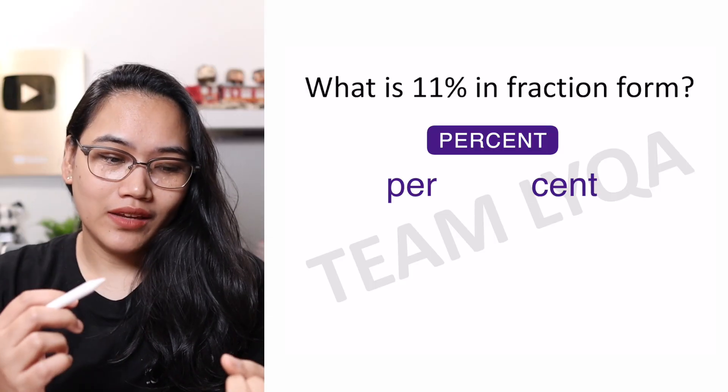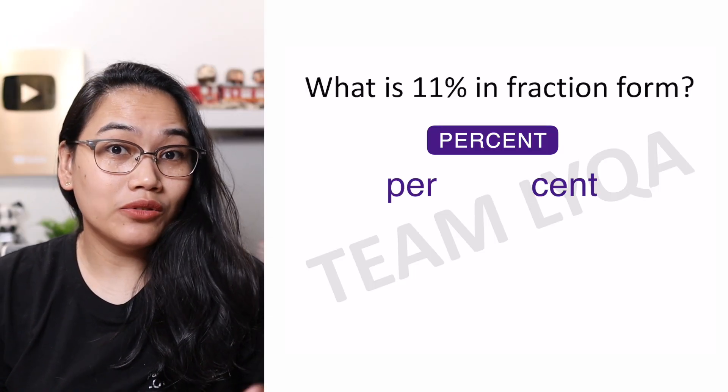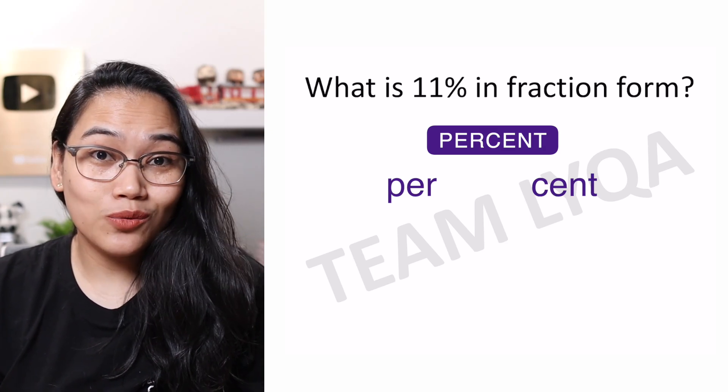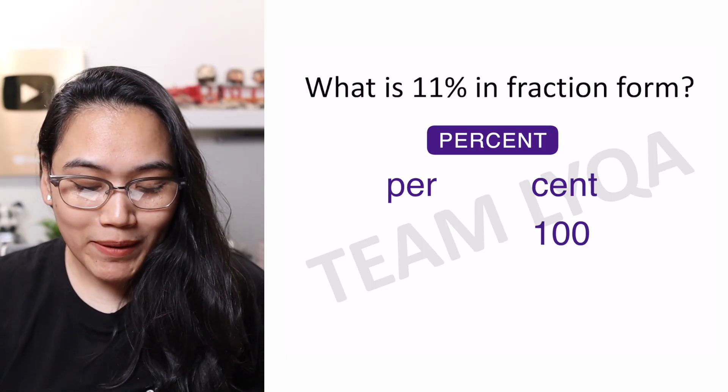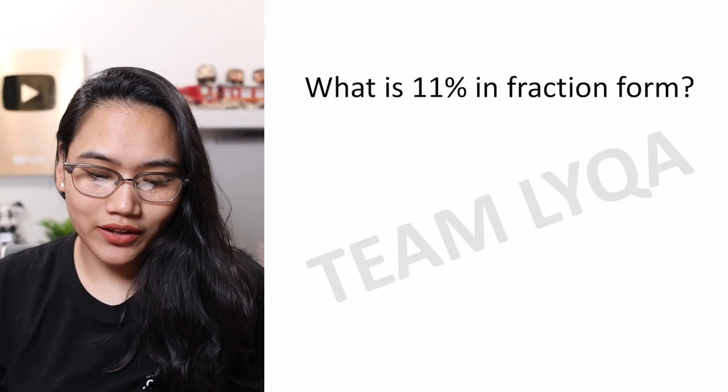We have centavo, centennial, century. A century is 100 years. Centennial is a 100 year celebration. Centavo means 100 cents is 1 peso. So cent means 100. That's why 11% means 11 per 100 or 11 for every 100.